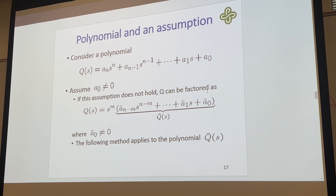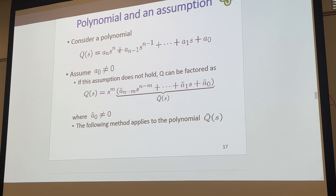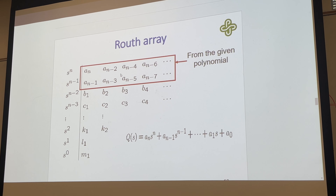There's no proof provided in any control textbook that Dr. Timersky has found. Getting into this method: we can consider any polynomial of the form Q(s) = a_n·s^n + a_{n-1}·s^{n-1} + ... down to s^1 and s^0 terms, assuming a_0 is not equal to zero. If that assumption doesn't hold, Q can be factored as s to some power times a polynomial where the constant term is not zero, and the method then applies to that polynomial.